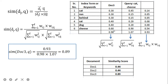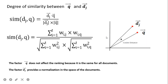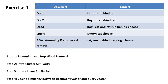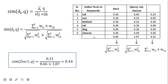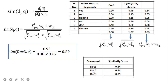For document three, the numerator is 0.93 and the denominator is 0.98 × 1.07, giving a cosine similarity of 0.89. Ranking the documents: document one scores 0.44, document two scores 0.44, and document three scores 0.89. Document three ranks first because it contains both 'cheese' and 'cat' from the query, making it the most similar. Document one and two follow with equal scores.